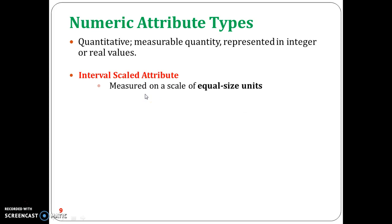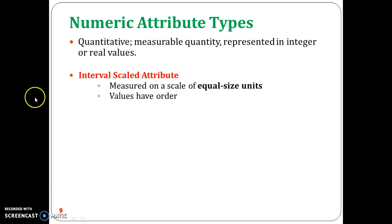Interval scaled is measured on a scale of equal-size units. The values of an interval-scaled attribute have order and can be positive, zero, or negative. In addition to providing ranking for values, such attributes allow us to compare and quantify the difference between values.